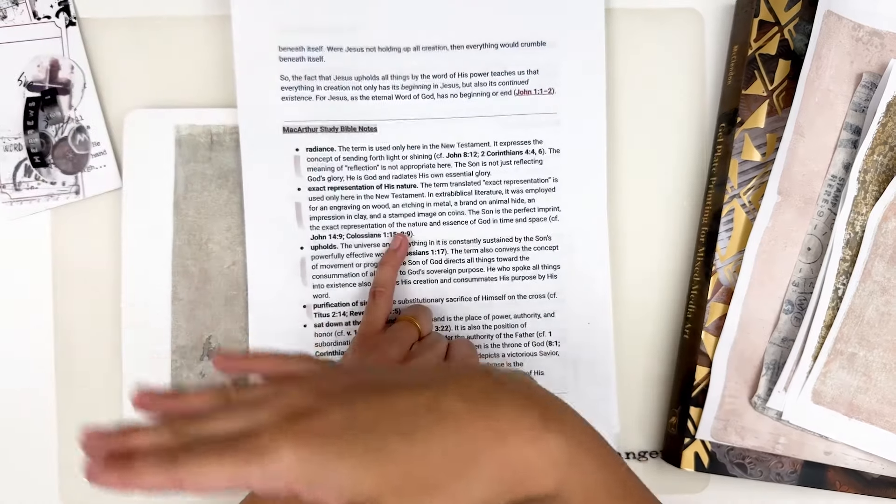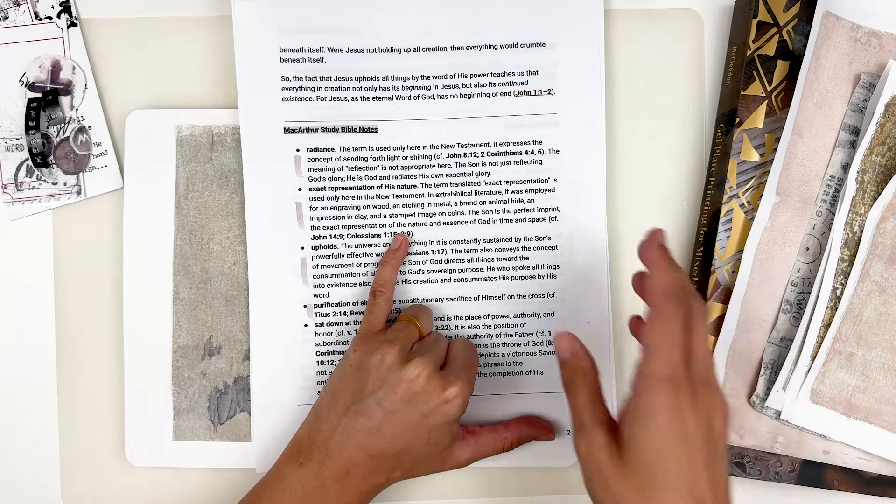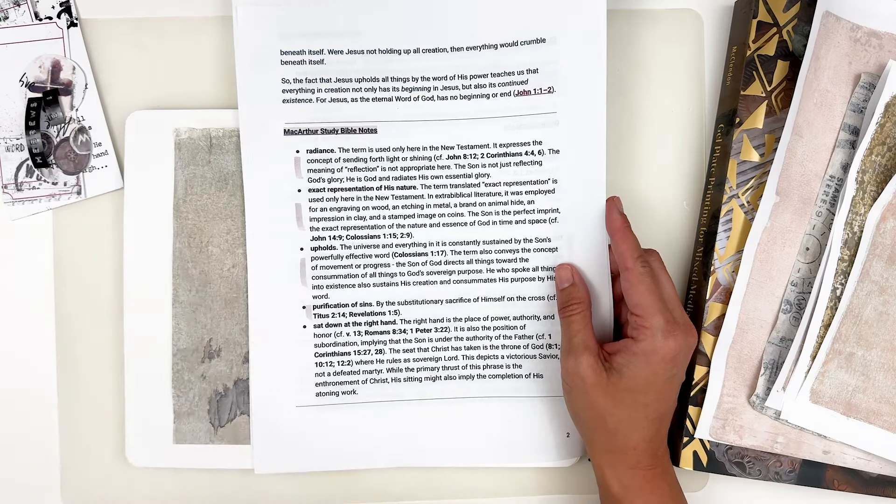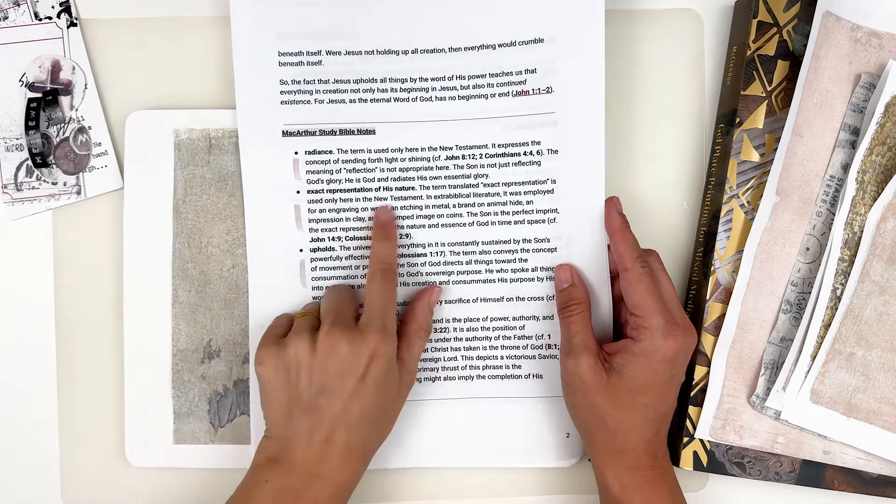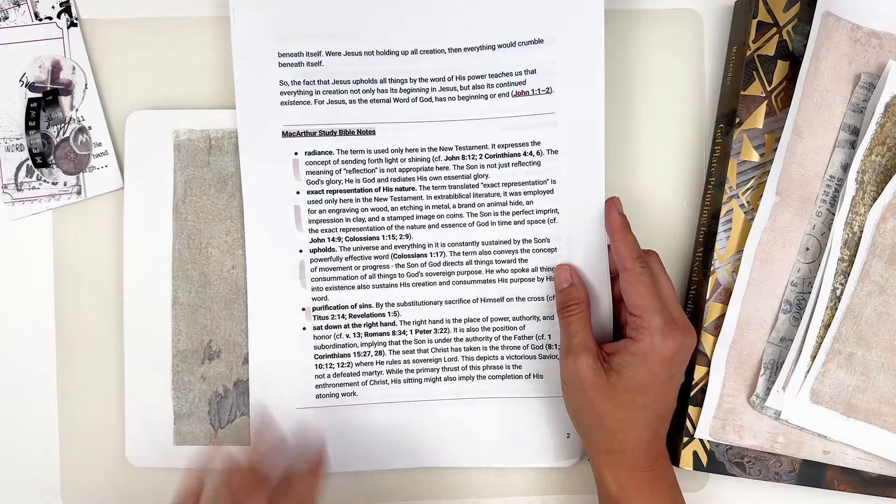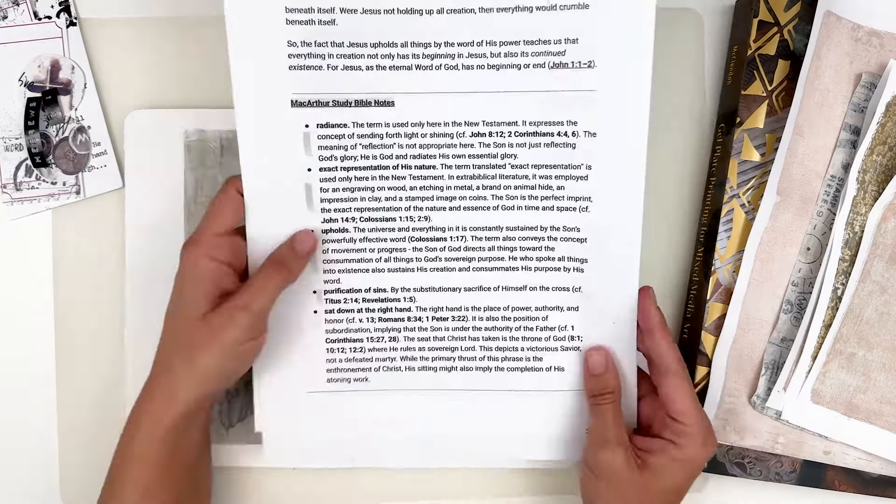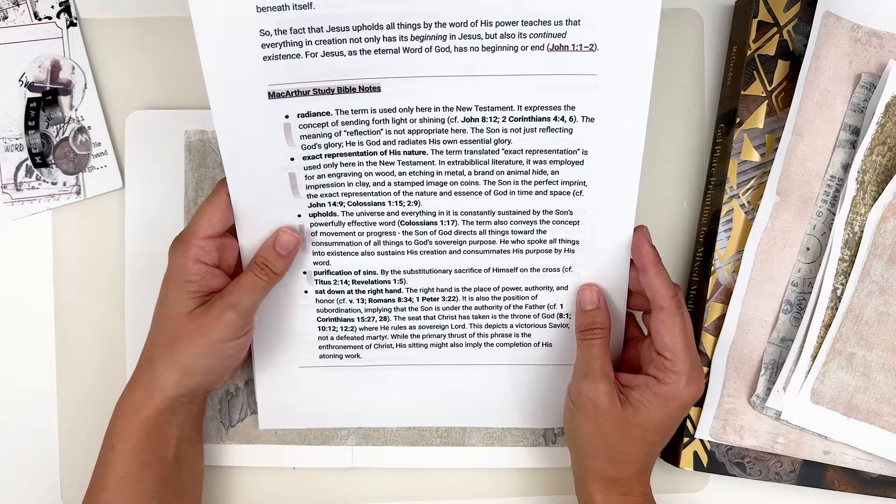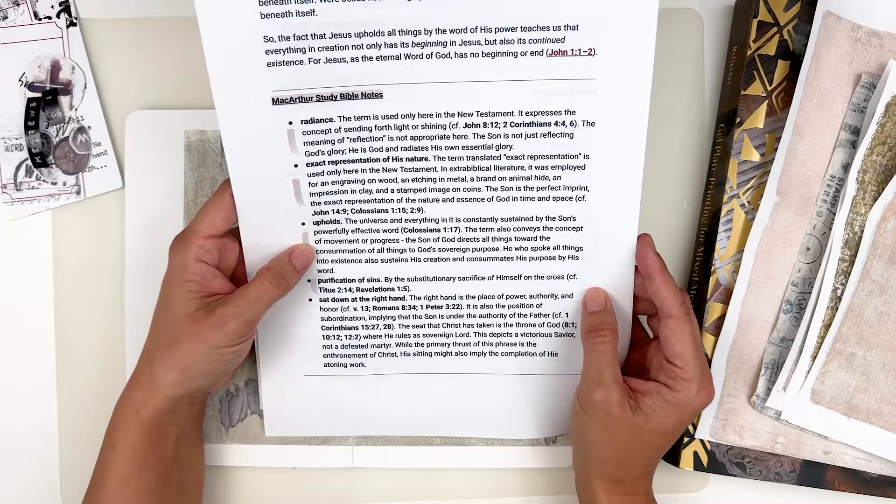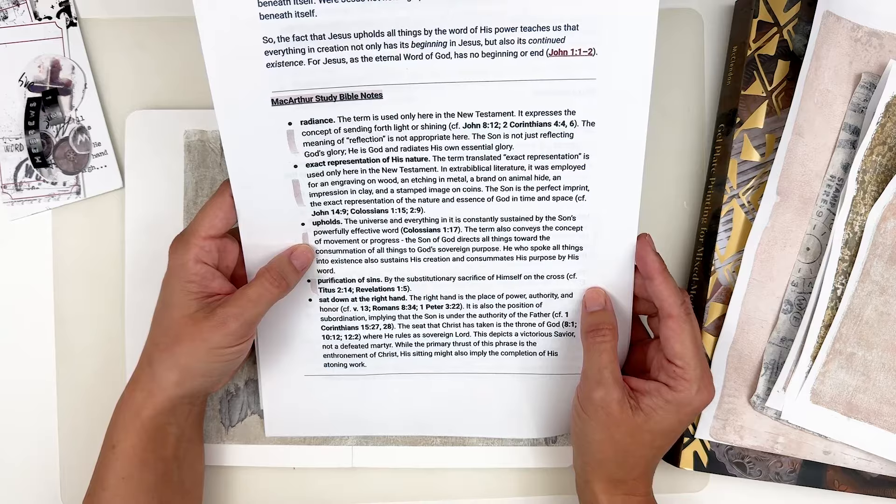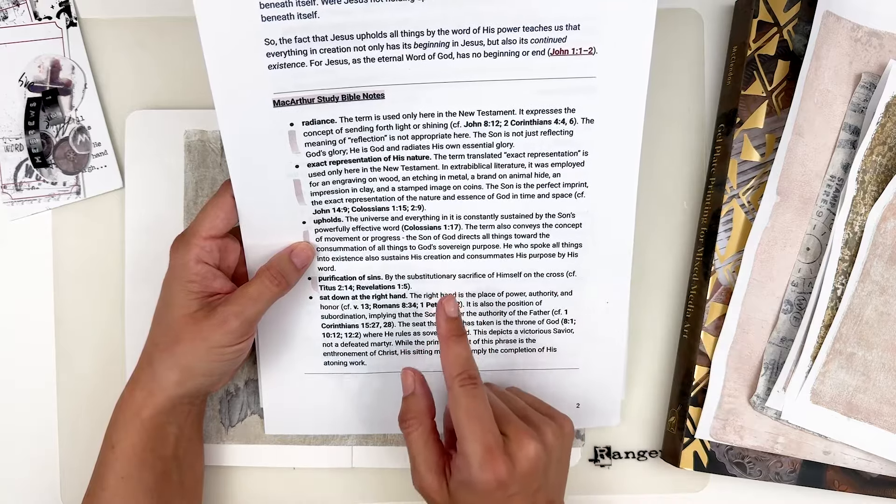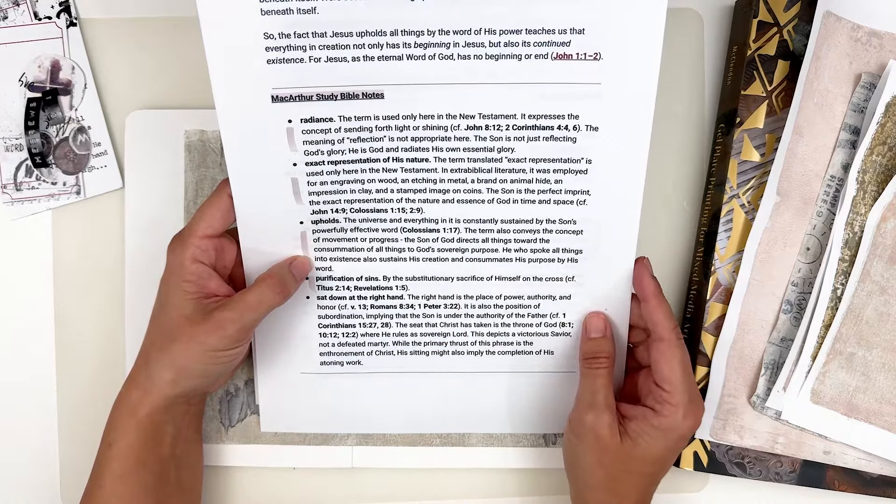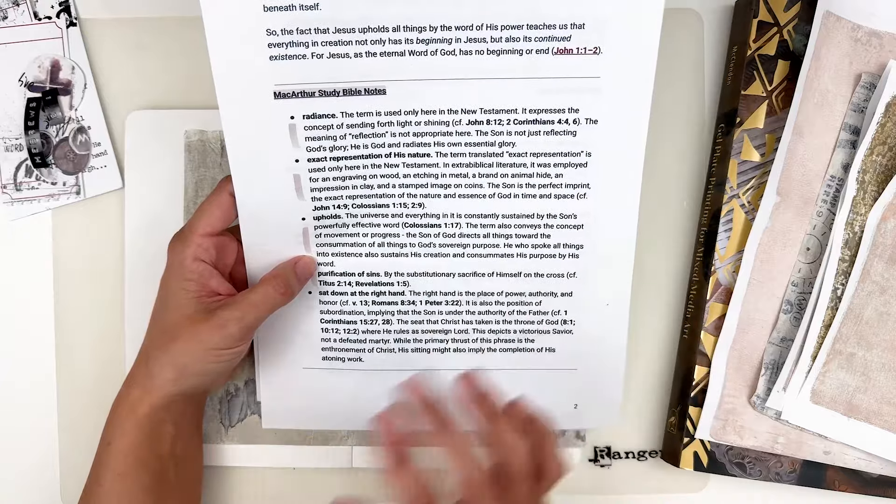Exact representation of his nature. The term translated exact representation is used only here in the new Testament in extra biblical literature. It was employed for an engraving on wood and etching and metal, a brand on animal hide and impression in clay and a stamped image on coins. The sun is the perfect imprint, the exact representation of the nature and essence of God in time and space. And then you've got some cross references there. As I'm reading that it's just coming to mind. I had to take a world history class last semester, and we really were looking at the stamps that certain countries or townships would stamp on their pottery.